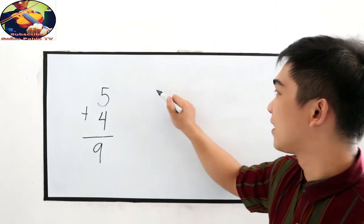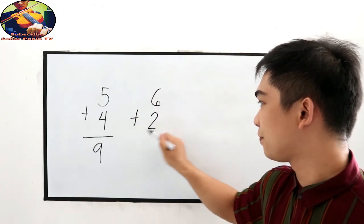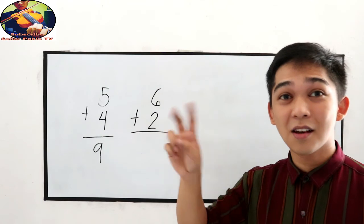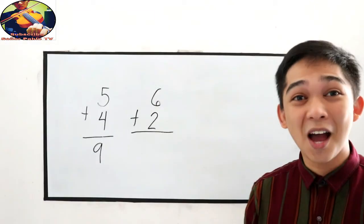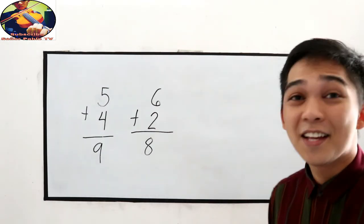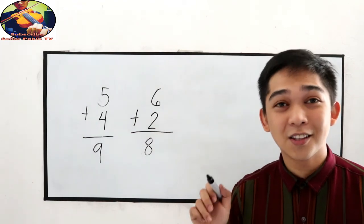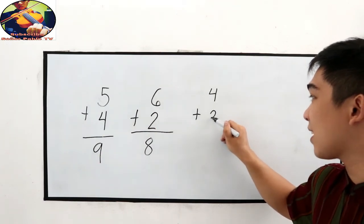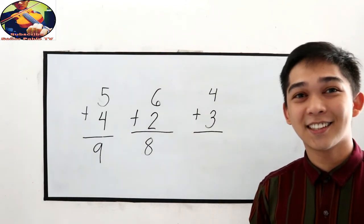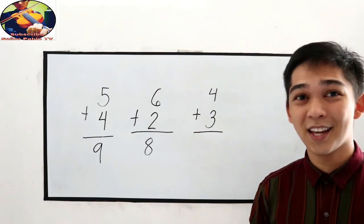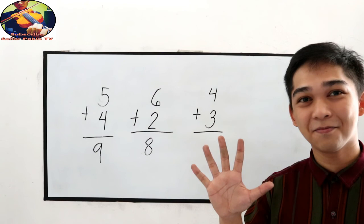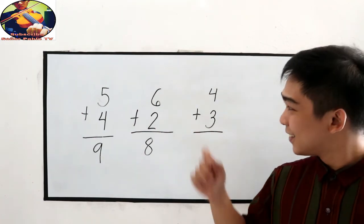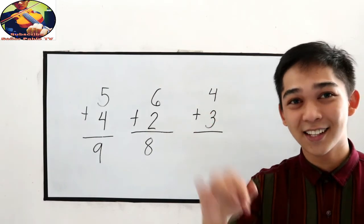Let's try one more: 6 plus 2. We get the bigger number, which is 6, then add 2. So 6 plus 2: 7, 8. So the sum is 8. Now, get your pencil and your notebook and solve this one. Let's say you have 4 plus 3. Can you try it? I will give you 5 seconds. What is our answer? So 4: 5, 6, 7. The answer is 7.